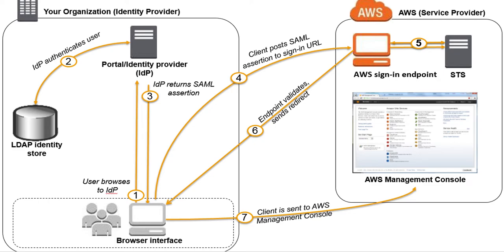At a high level, the SAML login process works like this: when the user logs in via the browser, it goes to the identity provider, the identity provider authenticates that user and sends back the SAML assertion document. AWS uses that information and calls STS to generate your access ID and secret token, which is then used to sign into your AWS console.